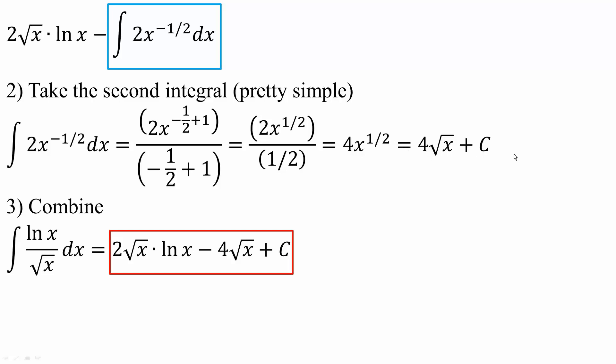Now we combine like terms. We're going to combine this piece minus this piece. So we would get 2 square root of x times ln x minus 4 square root of x plus c. This right here is our final answer. That's all we need to do for this problem.